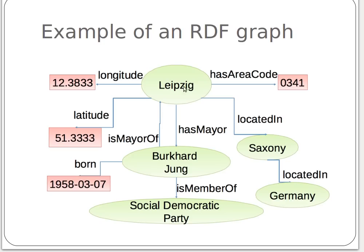Here's another RDF graph. We have a city called Leipzig: it has longitude value, latitude value, area value, and is located in somewhere; it has a mayor — this individual — and this individual is mayor of Leipzig, so those two properties are opposite of each other. He has a date of birth, he was born in this state, and is a member of some party; the country is Germany. You can see these are all triples — subject, predicate, value — and these are nodes or vertices in the graph, with edges connecting them.